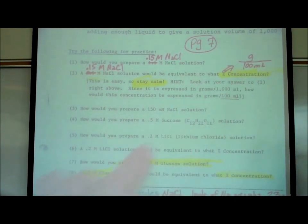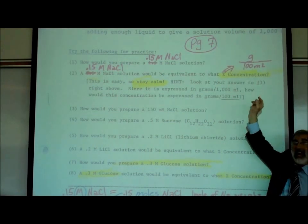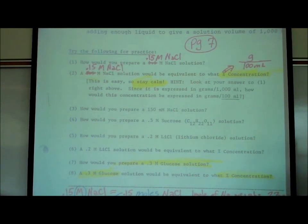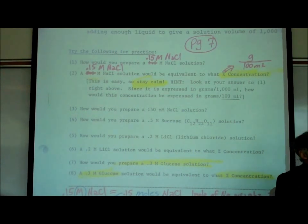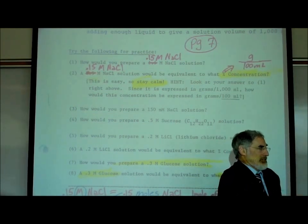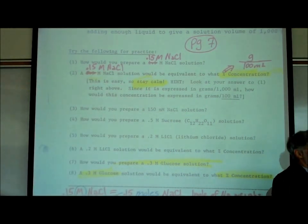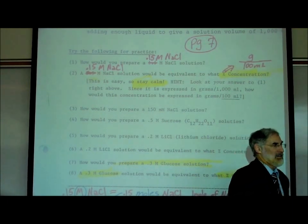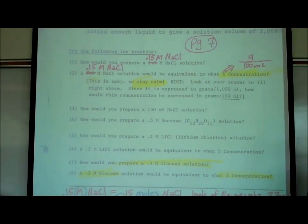Now, question number two said, a 0.15 molar salt solution would be equivalent to what percent concentration? Remember the symbol percent stands for grams per 100 milliliters. That's what the percent sign stands for, just like the capital letter M stands for moles per 1,000 milliliters. Moles have to be expressed in grams. In other words, if you wanted to add a mole of salt, you have to figure out how much does it weigh, because a mole is like a dozen, and we don't have tweezers to count out 12 or a mole. So all we can do is figure out how much does a mole weigh, and we weigh out that amount of salt, and then we pour it in the water. That's how you'd make it.